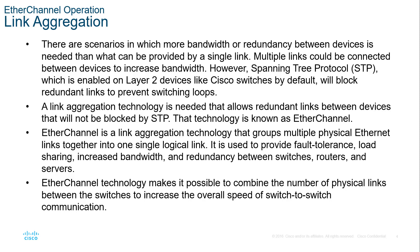When you combine two links for them to function, if we have Spanning Tree enabled, this could create a switching loop. The problem is we need to be able to do link aggregation without STP being triggered. So what we have to do is enable the technology called EtherChannel. This will have multiple physical links act as a single virtual link, thus not having STP start blocking anything.